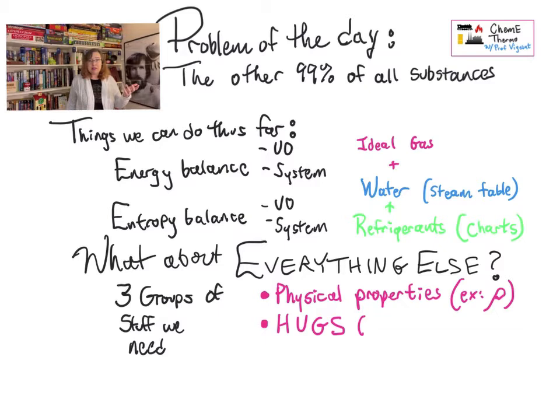Then to do energy and entropy balances, we need what I call hugs. Hugs: enthalpy, internal energy, entropy, and it's coming up. It'll be here eventually. Gibbs free energy. So we need those things to do energy and entropy balances and some other calculations that are going to be important to us.